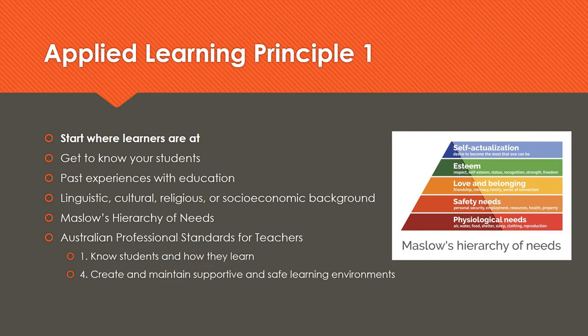Principle one can map to the Australian Professional Standards for Teachers, number one — knowing the student and how they learn — specifically 1.1, the physical, social and intellectual development and characteristics of students, and 1.2, understanding how the students learn. It can also link to standard number four, which is to create and maintain a supportive and safe learning environment.